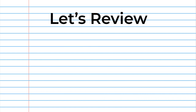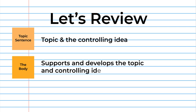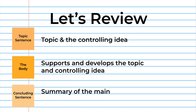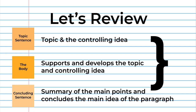Let's do a quick review. The topic sentence contains the topic and the controlling idea. The body supports and develops the topic and controlling idea. The concluding sentence is a summary of the main points and concludes the main idea of the paragraph. All three of these components make up a properly structured paragraph.